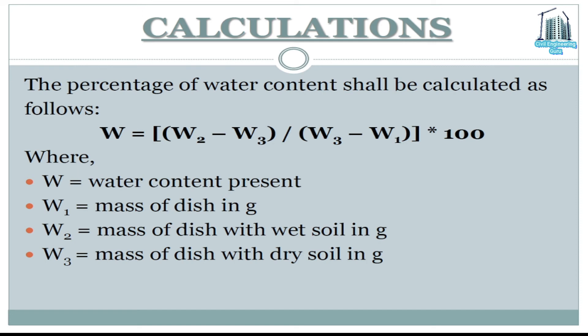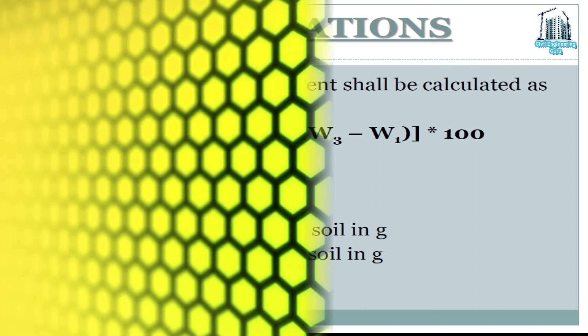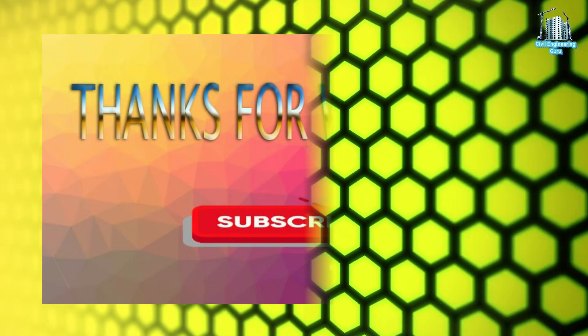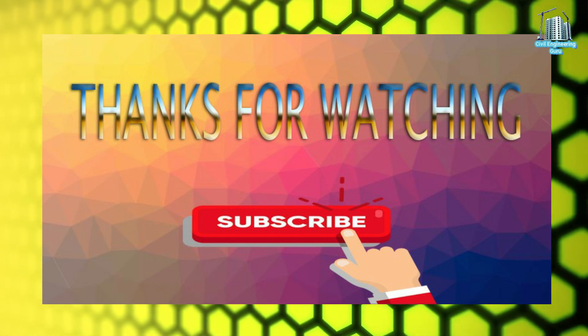Calculations: the percentage of water content shall be calculated as follows. W is water content percent; W1 is mass of dish in grams; W2 is mass of dish with wet soil in grams; W3 is mass of dish with dry soil in grams.